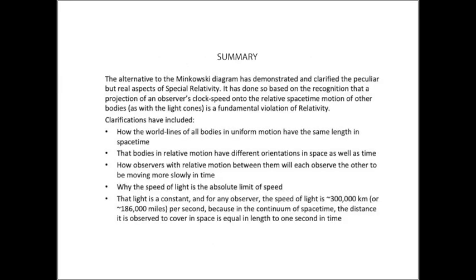So in summary, the alternative to the Minkowski diagram has, by representing observed motion in time as relative, revealed that all bodies in uniform motion will have world lines of equal length, that bodies in relative motion move perpendicular to space in their own coordinate system, as shown how observers in relative motion will each observe the other to be moving more slowly in time, as shown why the speed of light is the absolute limit of speed, and that light speed is constant because the distance light is observed to travel in space varies directly with the distance an observer travels in time. Comments are welcome.